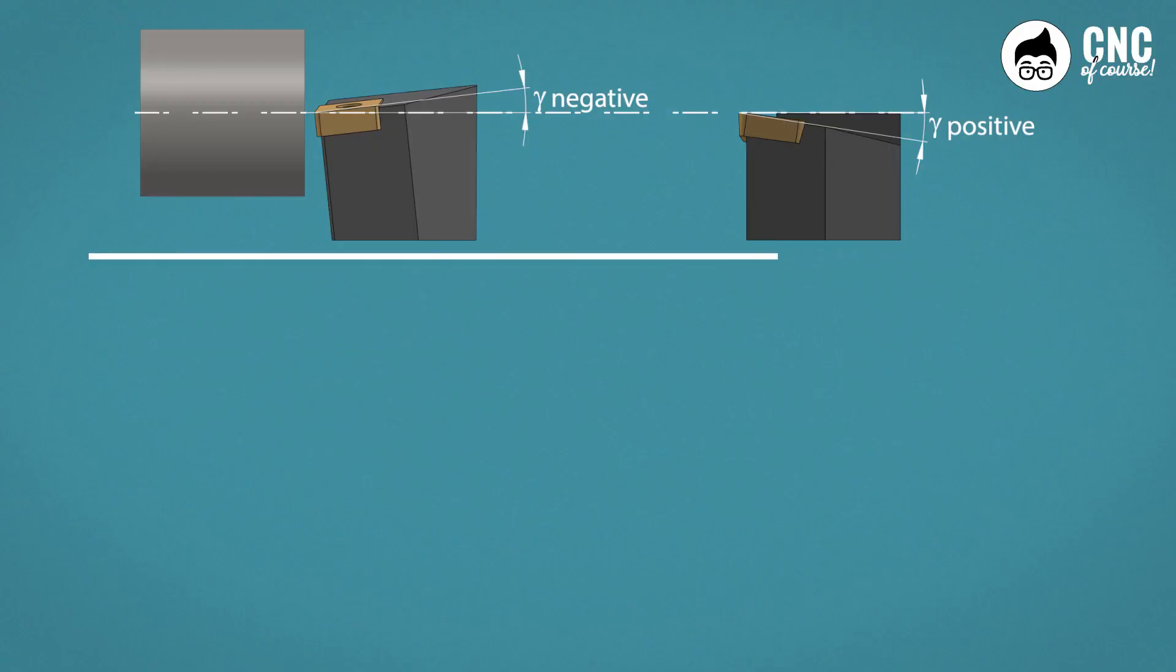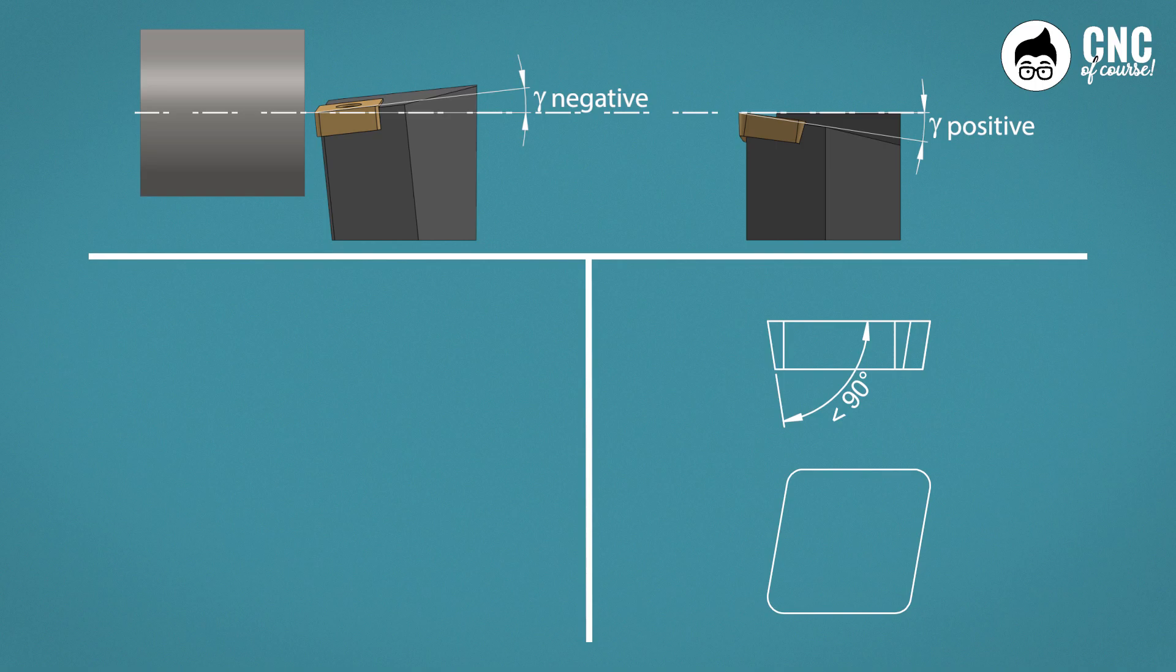Firstly, greater insert strength. Let's compare the two tools and focus on the clearance angle of the insert, which is defined by the second letter in the insert nomenclature. As we can also see from the drawing, the positive tool must necessarily have a rake angle greater than zero degrees, for example, five degrees, because if it were at zero degrees, it would heal with the lower part of the insert against the workpiece. Consequently,